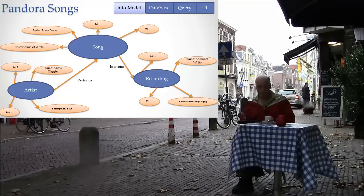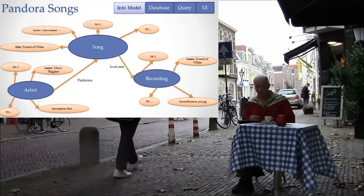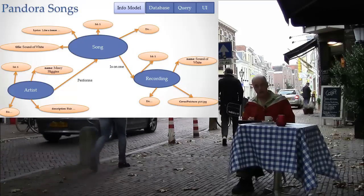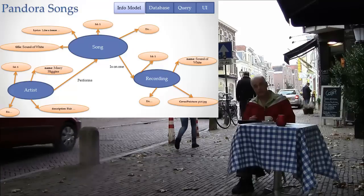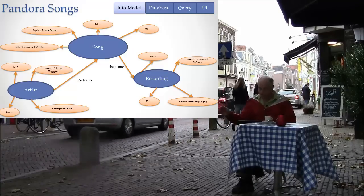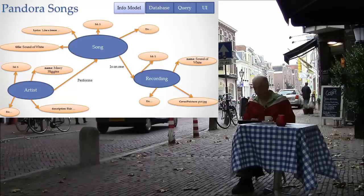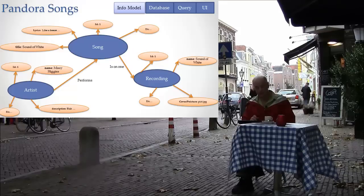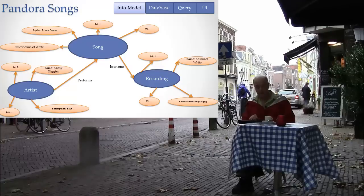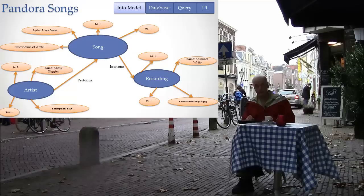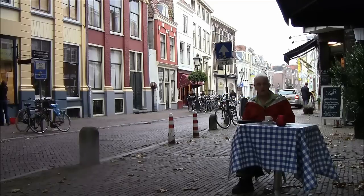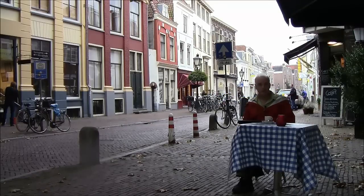As you move further and further into the ideas of information modeling, you'll see that this is a wonderful tool for communicating with people who are not deep into the tools of information modeling. So we have this idea of Pandora — Pandora has songs, artists, and recordings, and they're related to each other in this way. The big blues are the information items, the oranges are attributes, and notice there are arrows between the entities that specify how those information types are related.